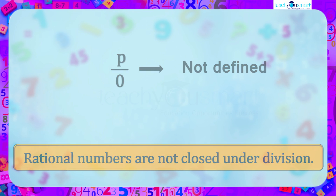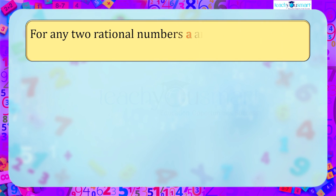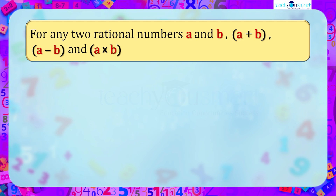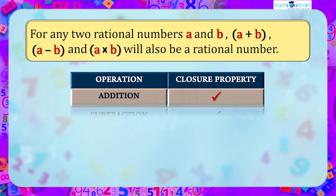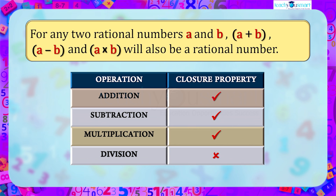In general, for any two rational numbers a and b: a + b, a − b, and a × b will also be a rational number — that is, rational numbers are closed under addition, subtraction, and multiplication.